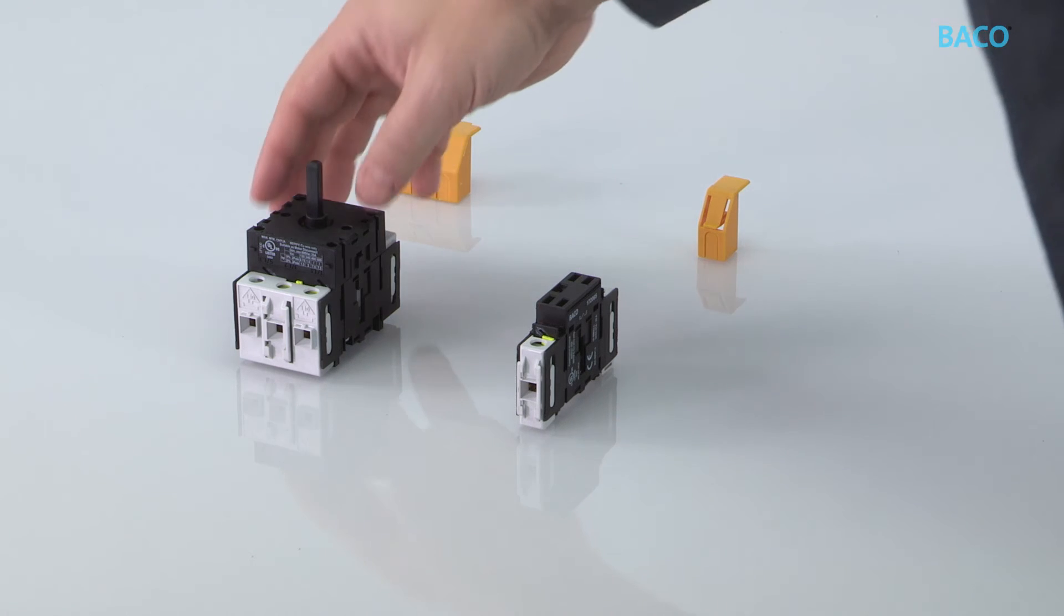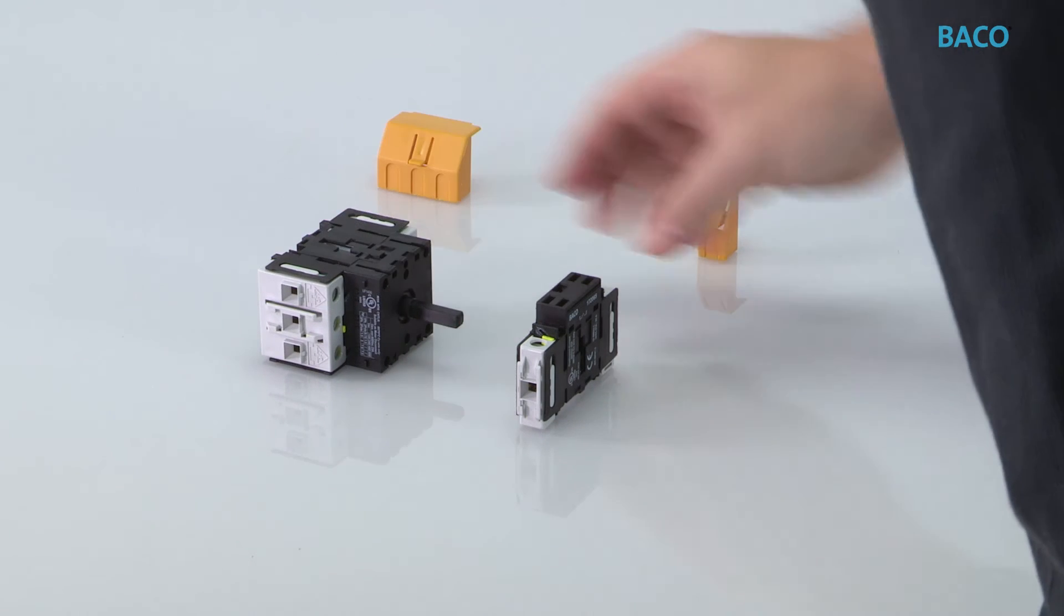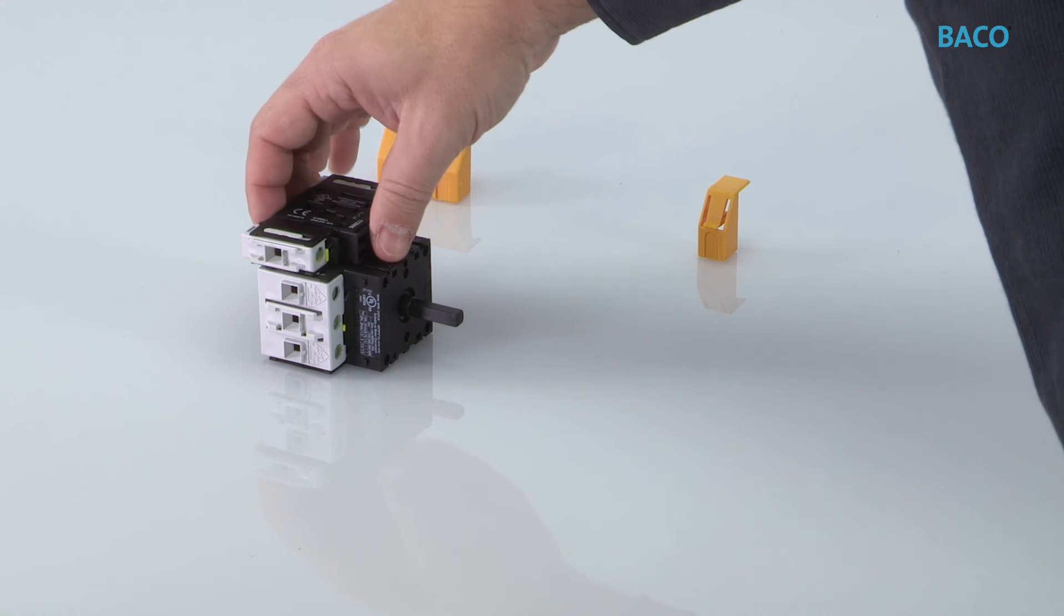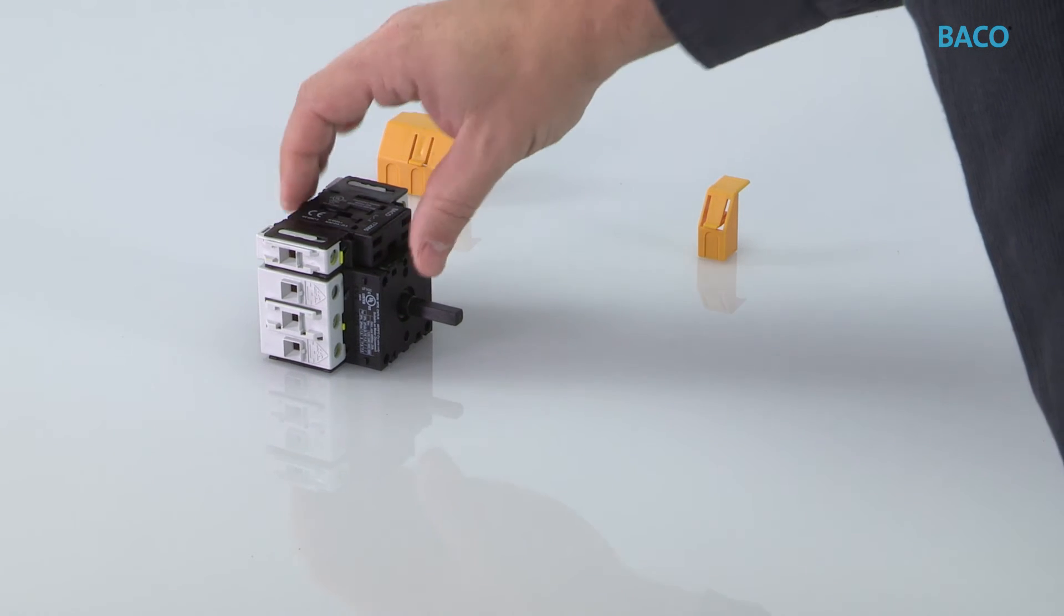A wide choice of associated contact blocks are possible. Additional poles, neutral pole, junction block and auxiliary contact can be snapped onto the three pole main block.